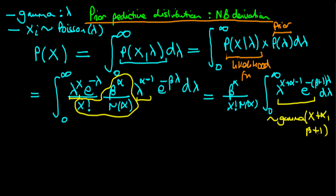What we'd like to do is get rid of this integral by making it exactly a gamma distribution, because then the integral from 0 to infinity just gives 1. So we rewrite this, first writing out the term beta to the power alpha divided through by x factorial times gamma of alpha, leaving a bit of space.